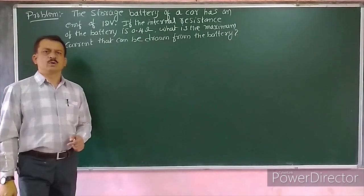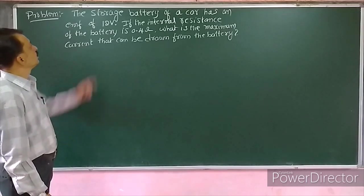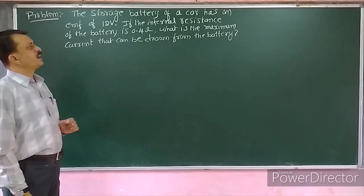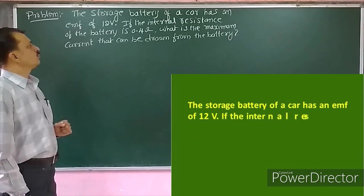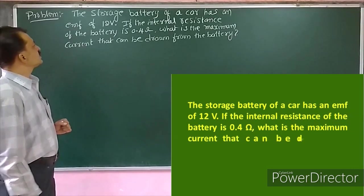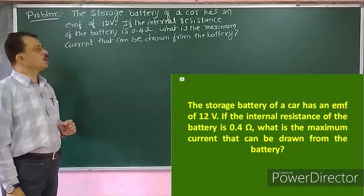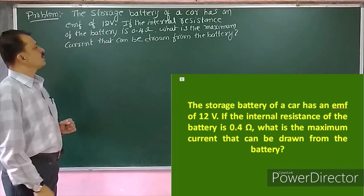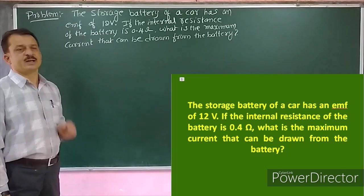Now we will solve some problems regarding the third chapter. First problem: the storage battery of a car has an EMF of 12 volts. If the internal resistance of the battery is 0.4 ohm, what is the maximum current that can be drawn from the battery?